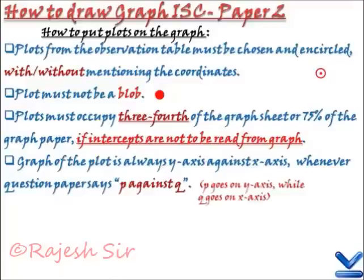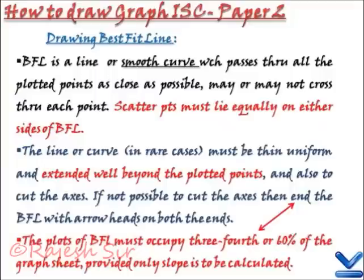If you are reading the intercepts, either y-axis or x-axis, it is necessary that the origin has to be 0,0. But over there, you are given the leverage. The plots may not occupy 60% of the graph sheet. Graph is plotted always y against x. So, y-axis against x-axis. So if the question paper says p against q, remember the p goes on the y-axis while the q goes on the x-axis.